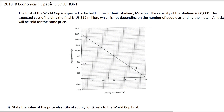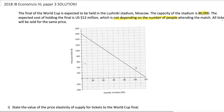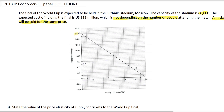Let's have a look at the question. It starts with this prompt: the final of the World Cup is expected to be held in the Luzhniki Stadium, Moscow. The capacity of the stadium is 80,000 — that's important. The expected cost of holding the final is U.S. $12 million, which is not depending on the number of people attending the match — also very important. All tickets will be sold for the same price — a very important clue that will help you later. You're also given a graph showing the demand for World Cup final tickets, with price per ticket from $1,600 down to $0, and quantity demanded in hundreds of thousands of tickets sold.